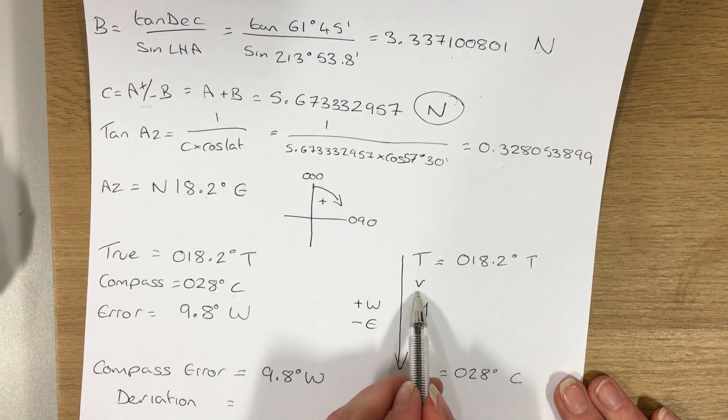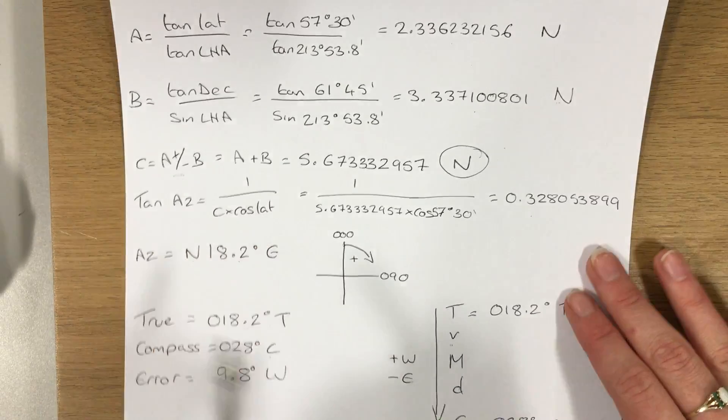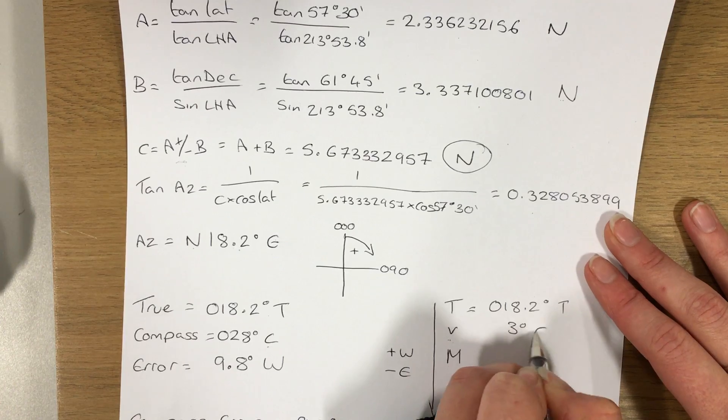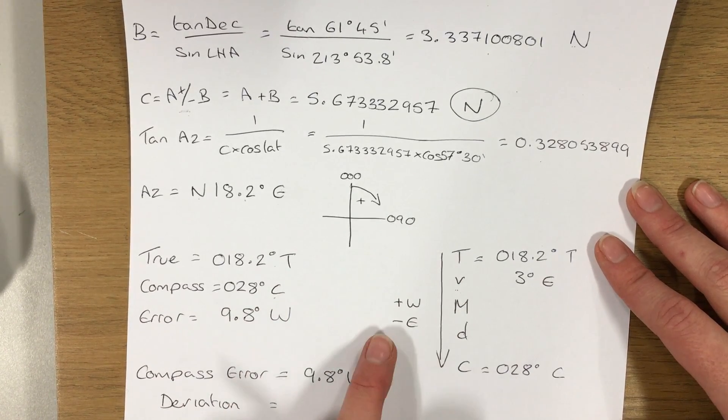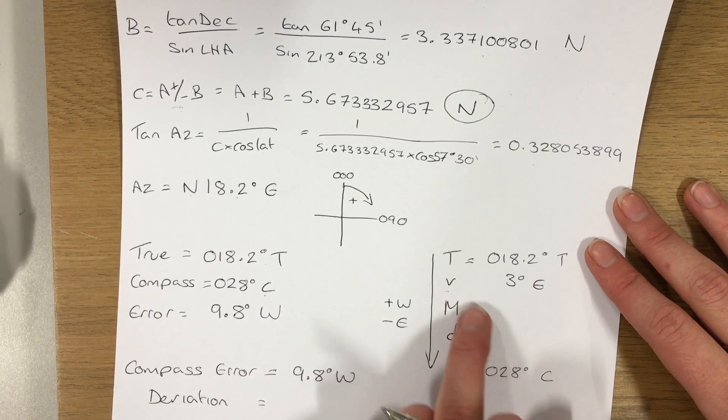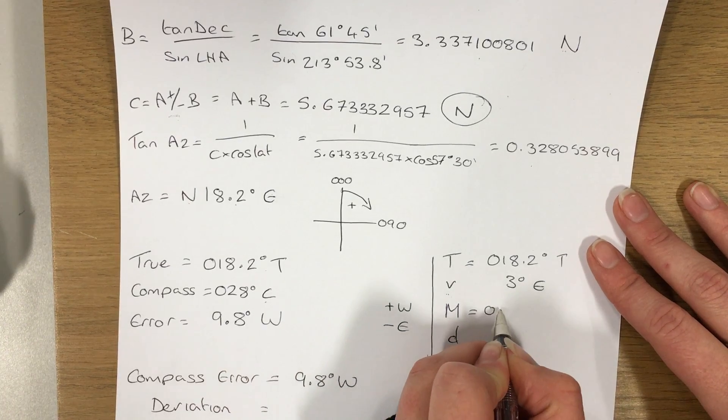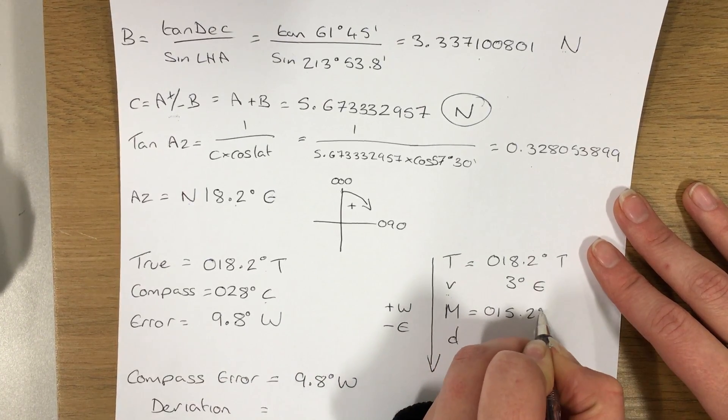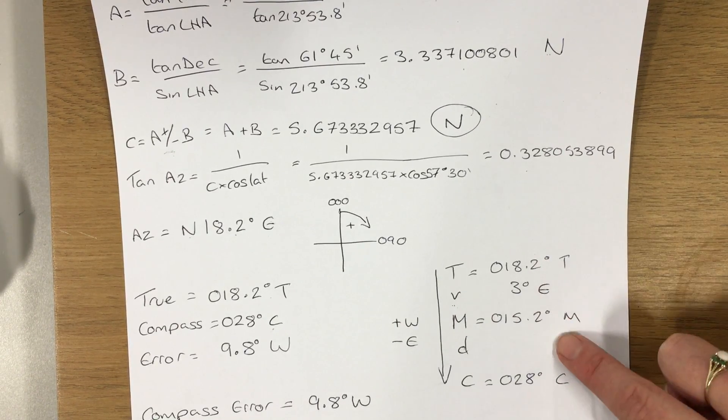The variation, V for variation, was given in the question as 3 degrees east. So if I'm working from true downwards, I'm adding west, minusing east. So M for magnetic is going to be equal to 015.2 degrees. That's my true minus 3 degrees gives me that.